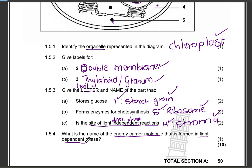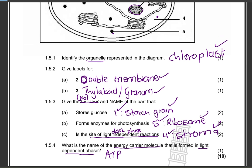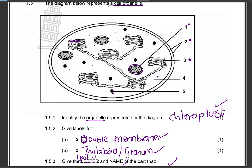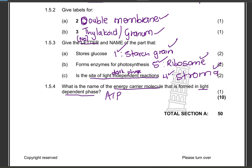What is the name of the energy carrier molecule formed in the light-dependent phase? That is ATP — adenosine triphosphate. Remember, in the thylakoids the light-dependent reactions take place, and in the stroma — the liquid part — that is where the dark phase, the light-independent reactions, occur. This is a topic you really need to aim to get high marks in, because it is not difficult. All the best!